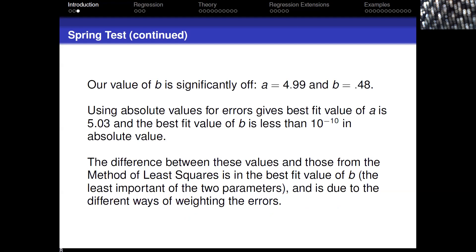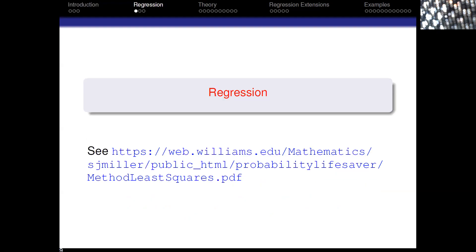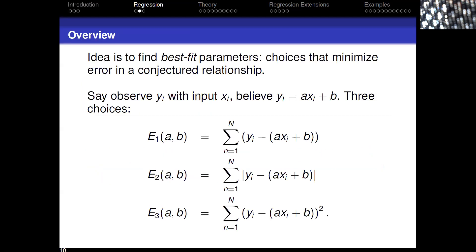How many of you have seen regression in a stats or econ class? Have you seen a theoretical justification for why the formulas work? The idea is to find parameters that give us the best values — but how do we define 'best'? We'll assume a linear relationship, y = ax + b. Most relationships in the world aren't linear, but there are tricks we can use to make this widely applicable.